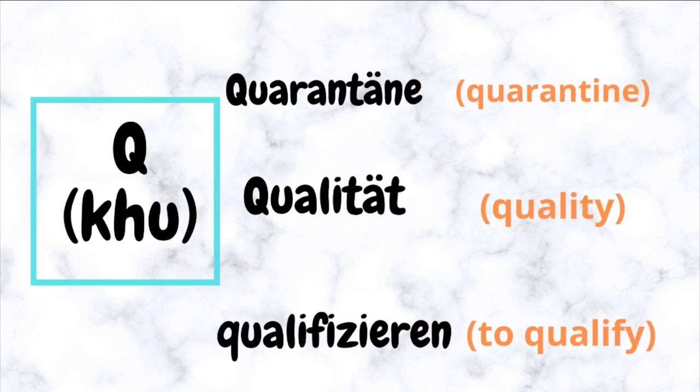Q (Khoo) — for example: Quarantäne, Qualität, Qualifizieren.